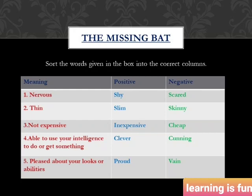The fifth word means 'pleased about your looks or abilities.' The positive meaning is 'proud' and the negative meaning is 'vain.' 'Proud' is a pleasant feeling that comes when you achieve something or possess a quality. 'Vain,' however, is feeling proud in a bad way — like feeling you are the only one that matters. You have to do this exercise in your book in the same way.